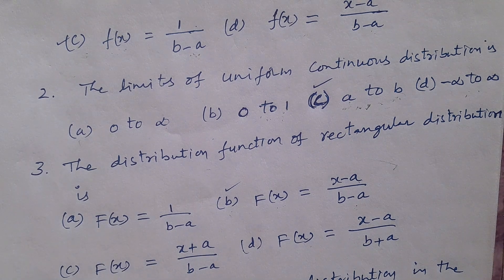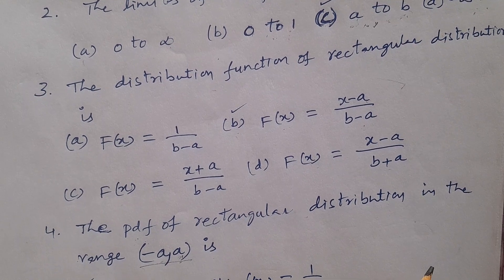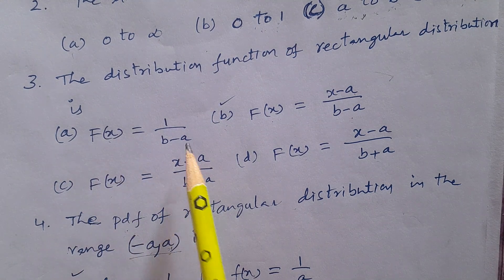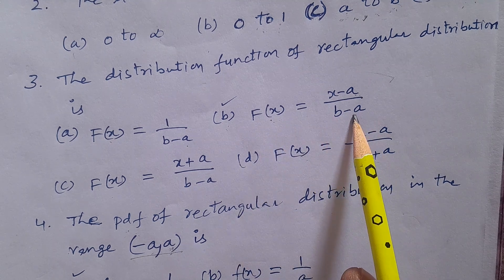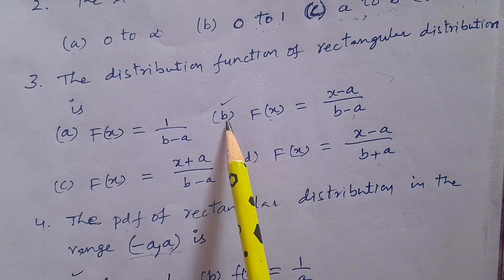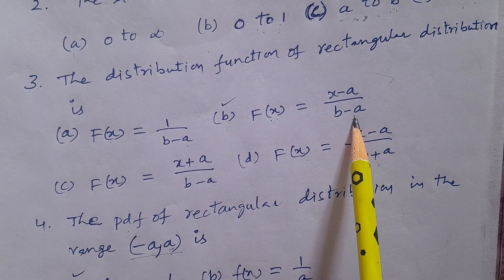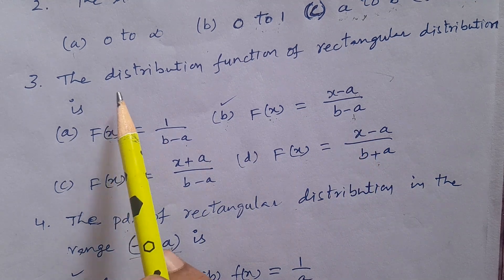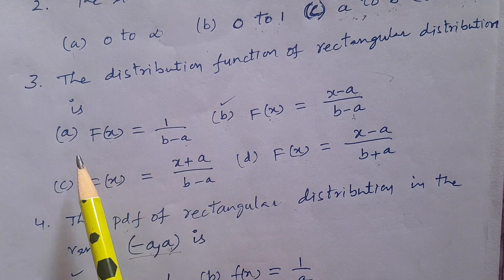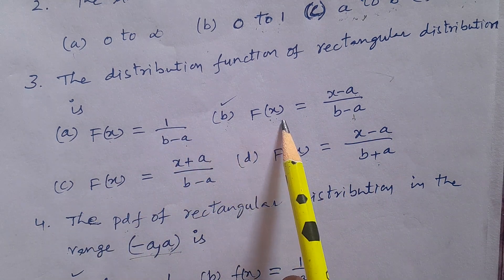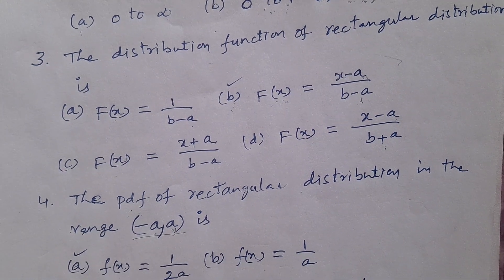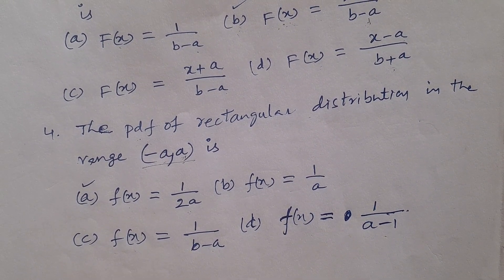Question number 3: The distribution function of Rectangular Distribution — options: A. F(x) = 1/(b-a), B. F(x) = (x-a)/(b-a), C. F(x) = (x+a)/(b-a), D. F(x) = (x-a)/(b+a). The answer is option B: F(x) = (x-a)/(b-a). This is the distribution function of rectangular distribution.